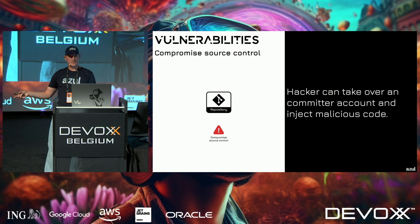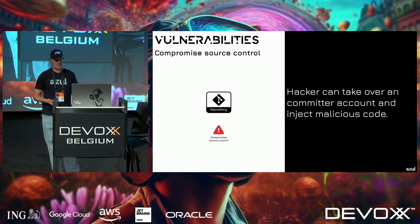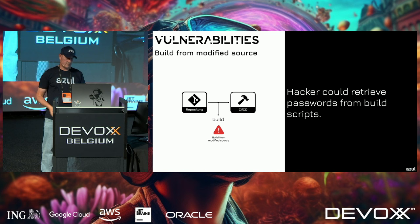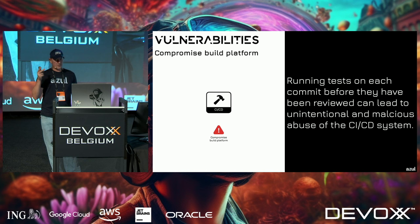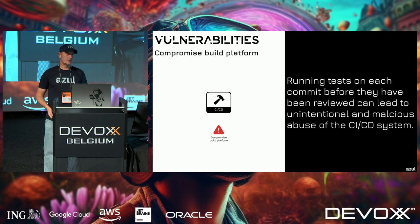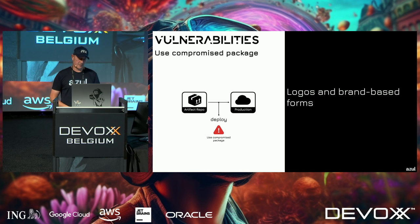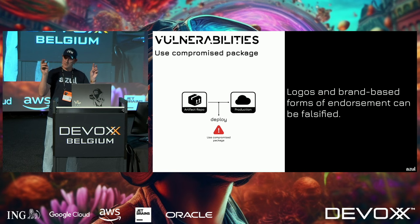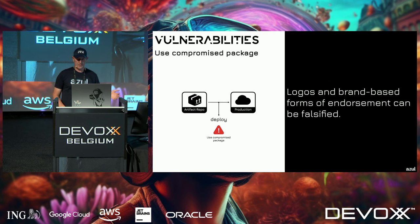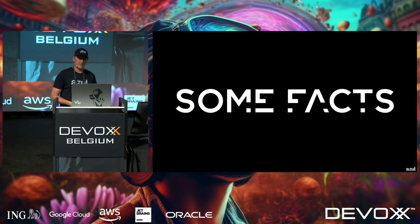In open source projects, you may not know all the contributors. If you don't verify where dependencies come from, you can have CI/CD systems abused, or attackers can upload modified packages to artifact repositories. This sounds far-fetched, but it happens frequently — just like phishing emails that look like your bank.